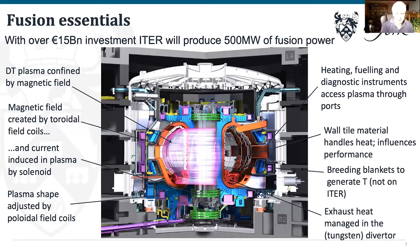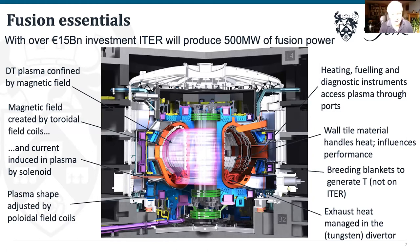ITER is a very special tokamak currently being built in the south of France with seven international partners, of which Europe — and the UK within Europe via ITER/EDA — is one. The UK is directly involved in important parts of the ITER program. ITER will deliver 500 megawatts of fusion power, representing an investment of over 15 billion euros.